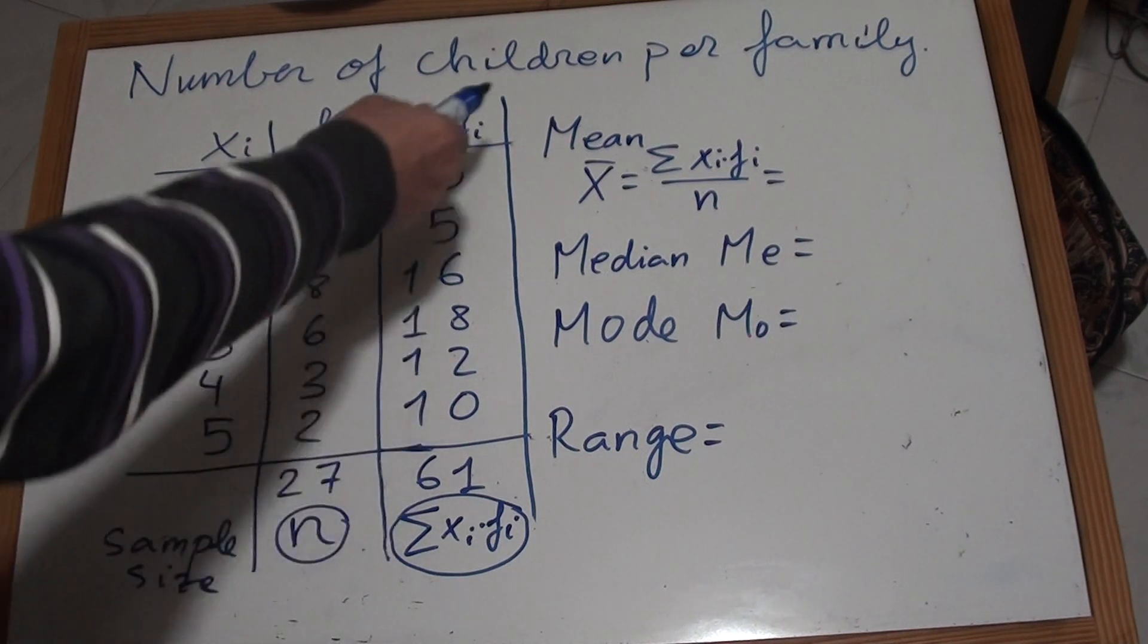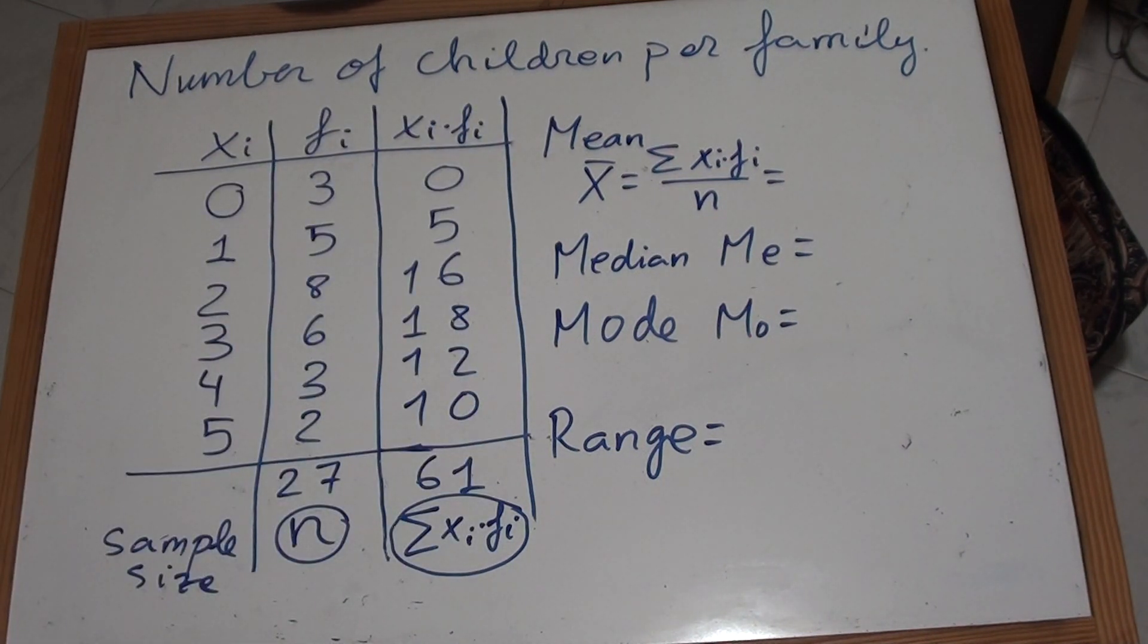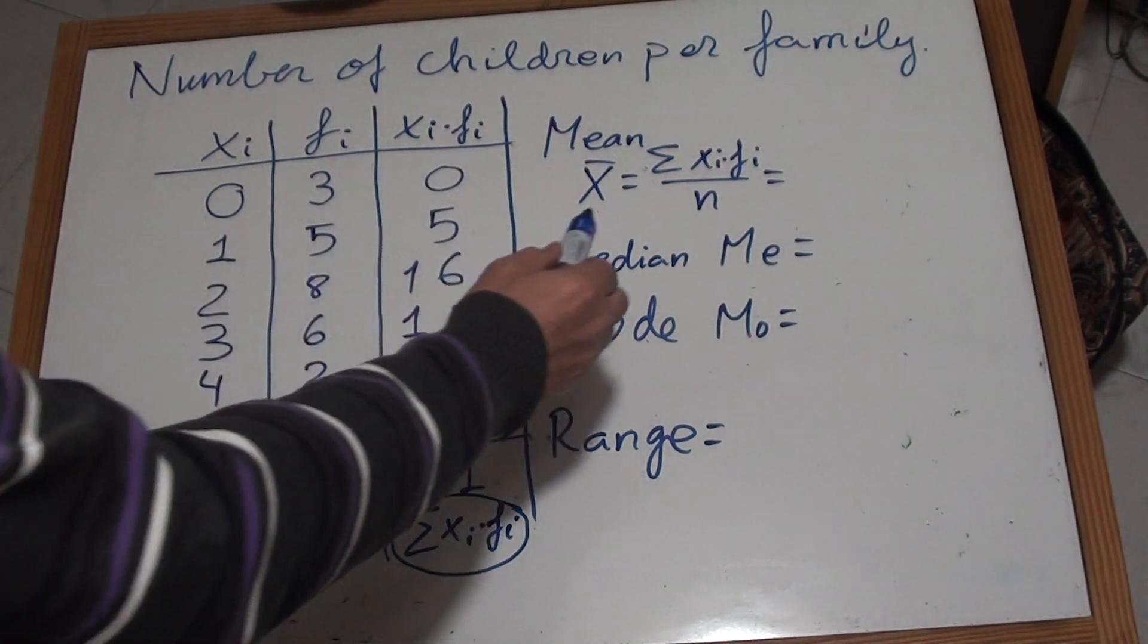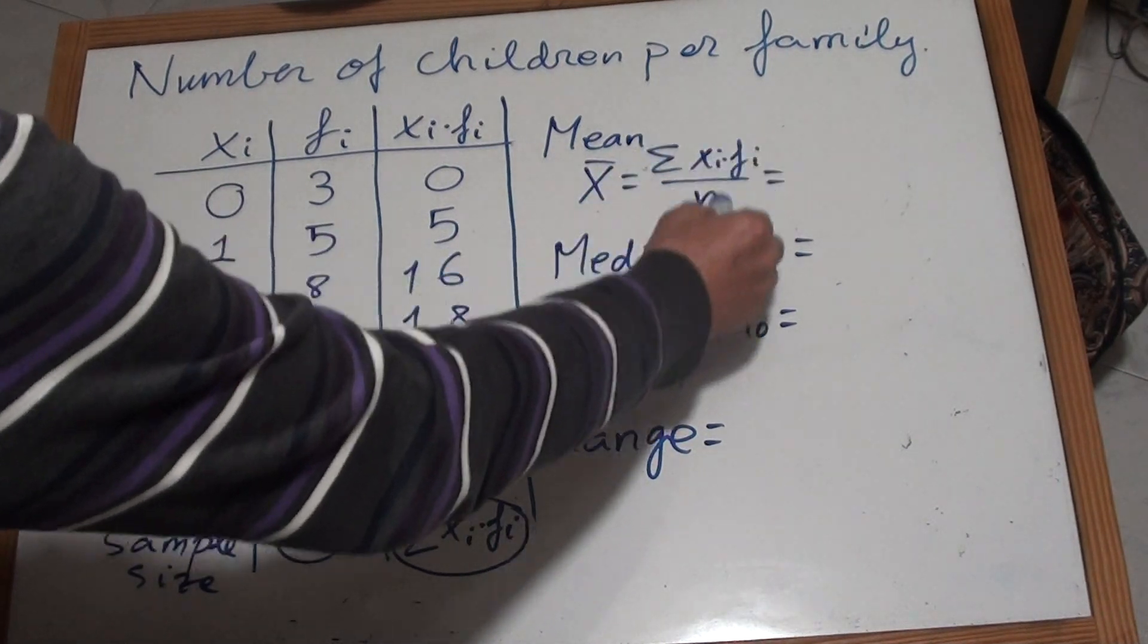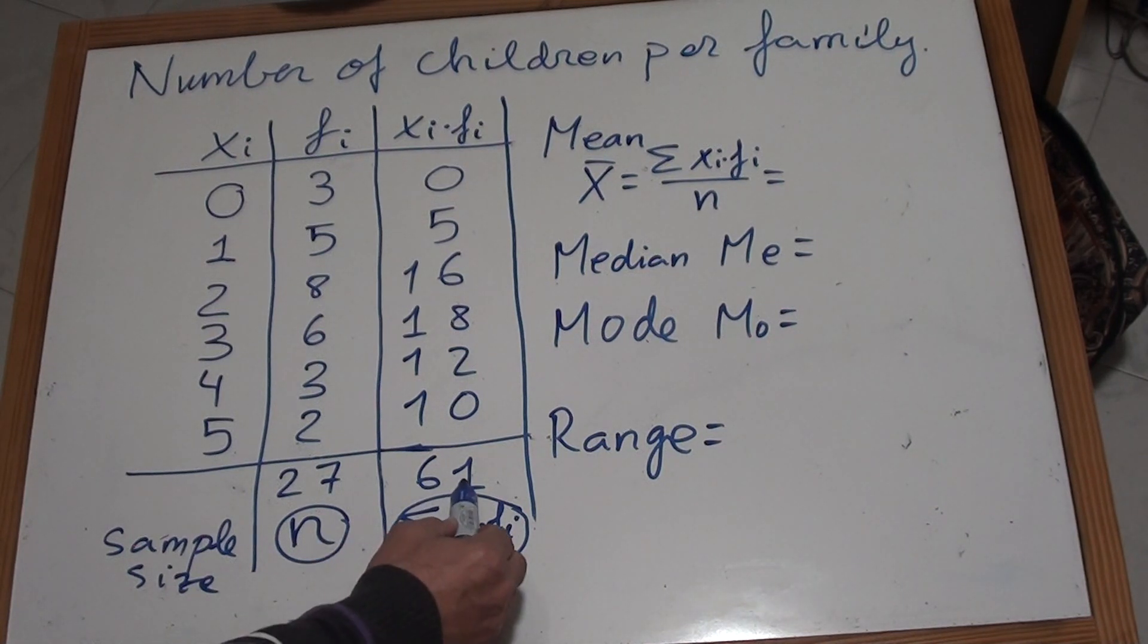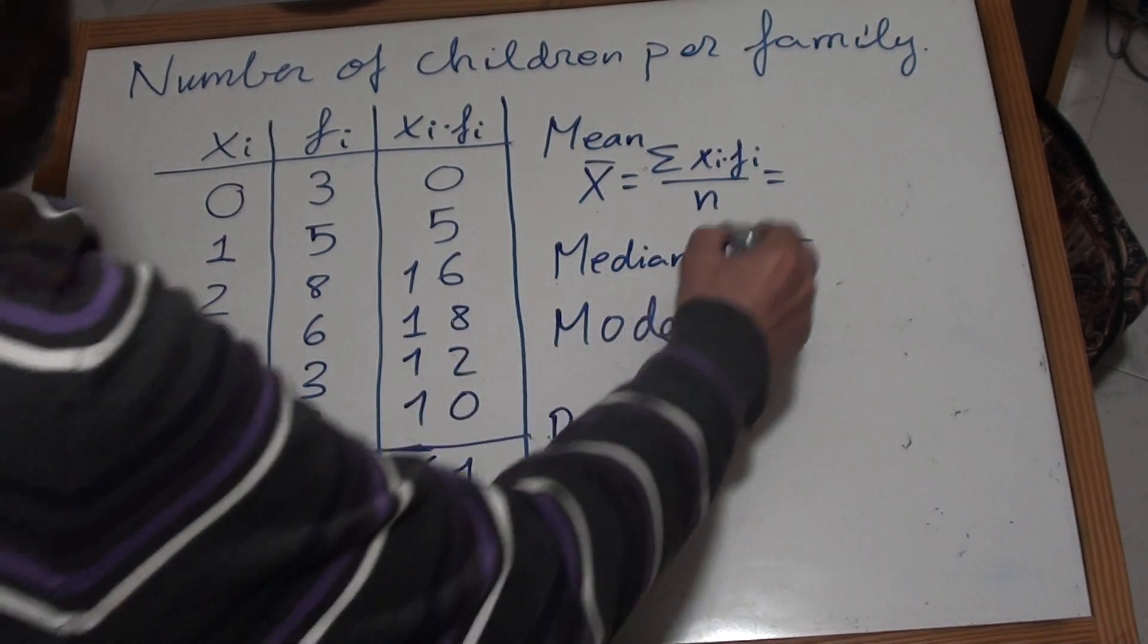And now we are going to find the parameters of this statistical study. So in the first place we have the mean, which is the most common parameter in statistical studies, what you may call the average. The average of a statistical study which is found by dividing the sum of the data times the frequency divided by n. So in this case is 61 divided by 27.